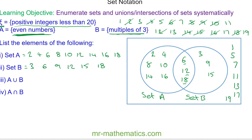And now list the elements of A in union with B. If you remember, this is the union which is the full area within the two circles. So this includes 2, 4, 6, 8, 10, 12 which are all the even numbers, plus the multiples of 3 which are 3, 9, and 15.